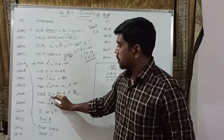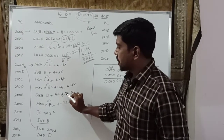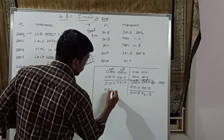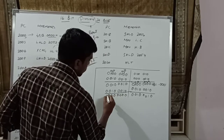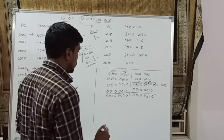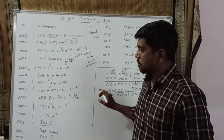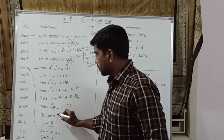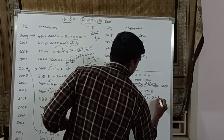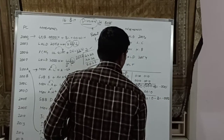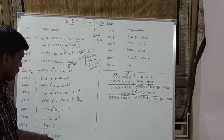Here also SBB D — subtract with borrow D. Accumulator content is A minus D minus borrow. In this function also no borrow — so just subtracting A and D values. D value is 22H. After subtraction, all bits are 0. The accumulator content is transferred to H register. Then check the condition — whether subtraction produced carry or no carry. In this case also no carry, so condition is false, execute next instruction INX B. BC pair value becomes 0002H. Then jump to 200AH again.